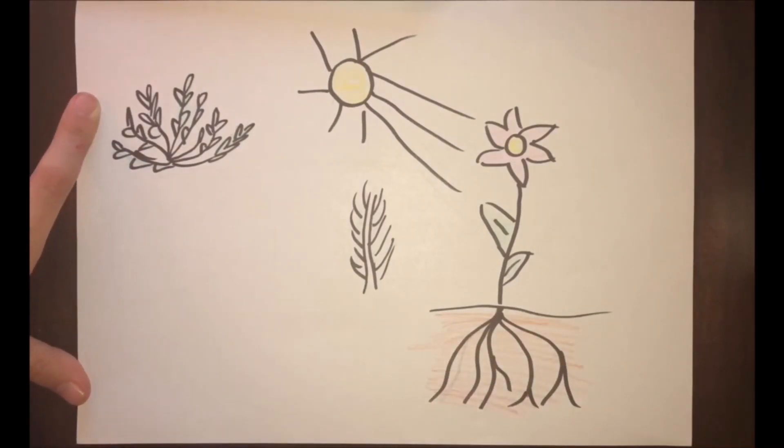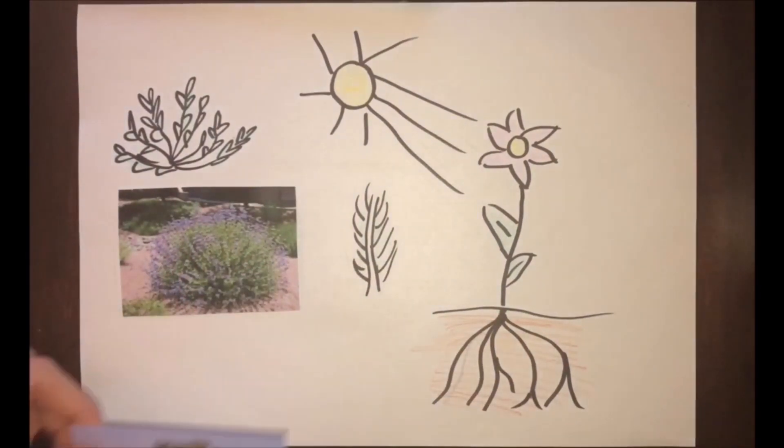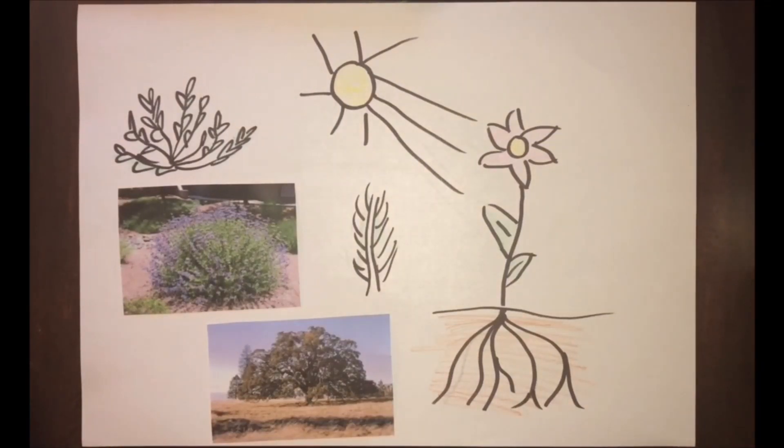fire-resistant barks, and hard leaves to survive the droughts. Examples are the blue oak tree and the sage bush.